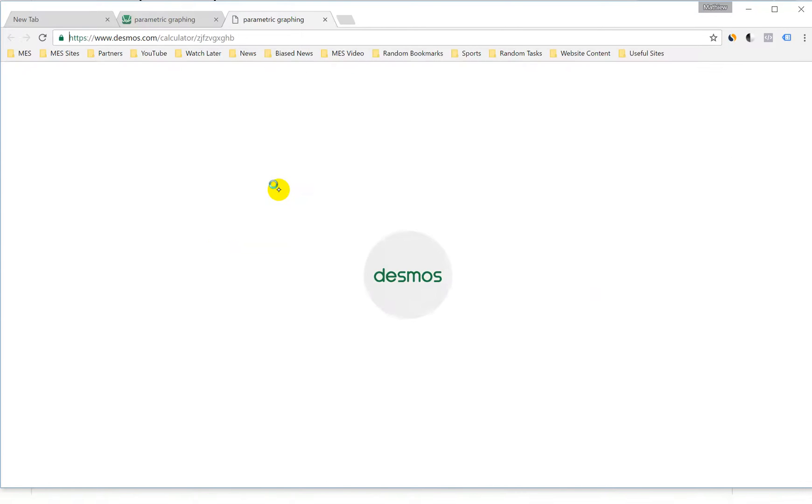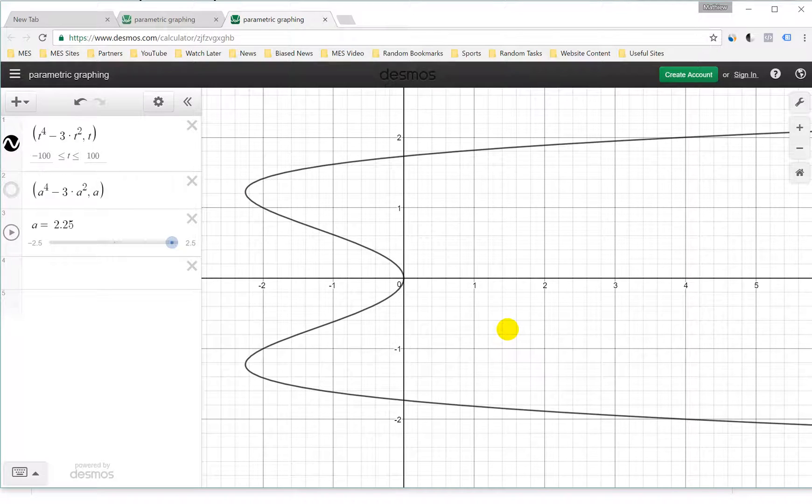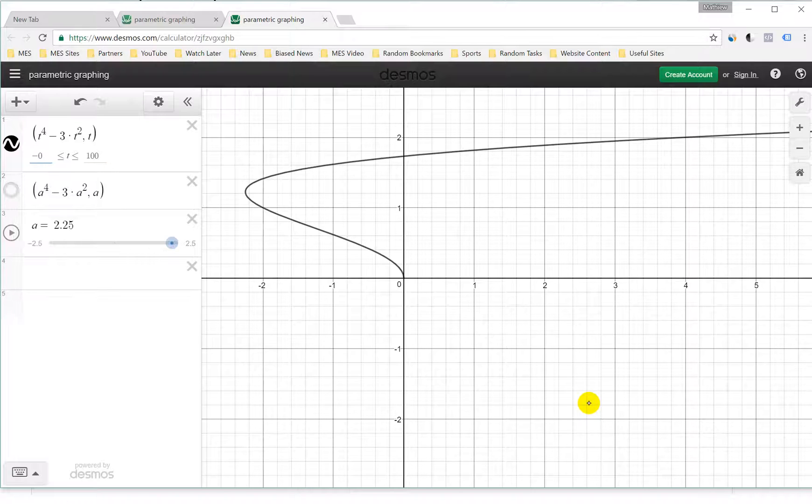Here we have the exact same shape. Notice I wrote t to the power of 4 minus 3t squared, and then comma t. If you put this bracket, that's just a point - this is the x coordinate and then the y coordinate is just t, where t is graphed from negative 100 to 100. If we change this, for example to 1, notice this whole half gets cut off. So if we go to 0, it gets something like that. As you can see when you change t, we have different areas of the curve.